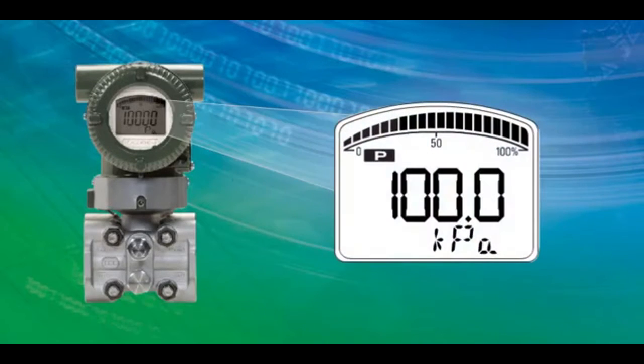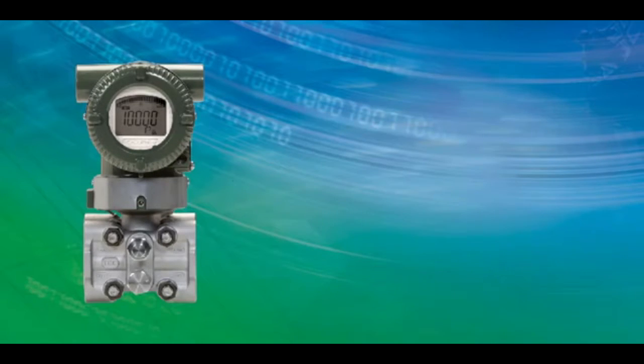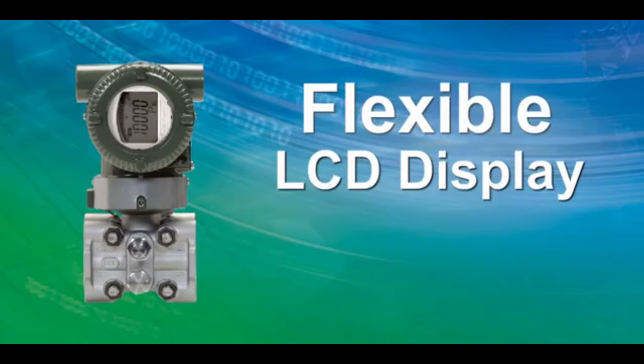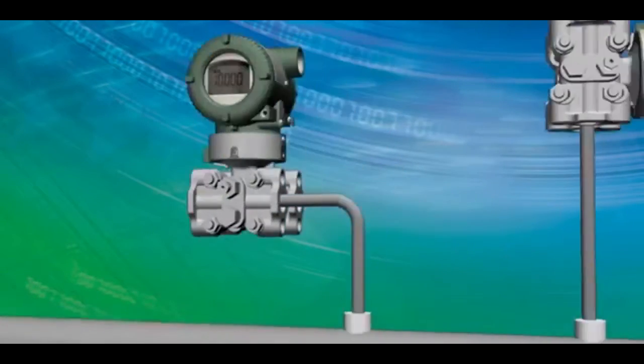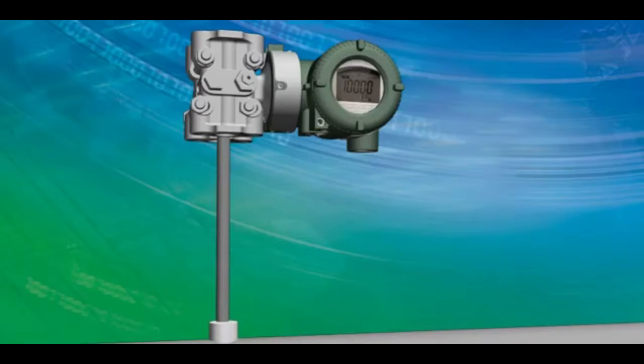The rich display of DP-HARP transmitters makes installation, commissioning, and operation easy. The flexible LCD display can be rotated in 90-degree increments to accommodate horizontal or vertical impulse line installations.